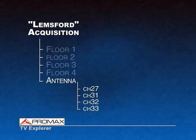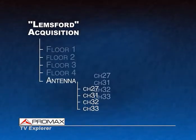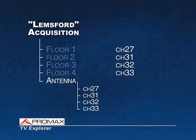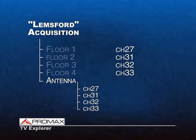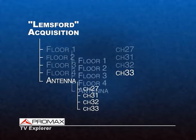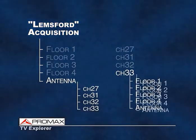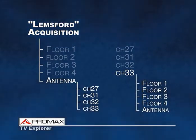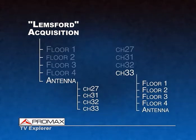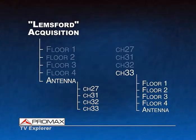It is also possible to display the recorded data in a different way: by selecting one specific channel — channel 33, for instance — and viewing the data corresponding to that channel at the various measurement points. This is quite helpful to see how the signal varies as it travels through the distribution network. If there is a problem somewhere in the installation, it can be immediately detected by noting the name of the measurement point.